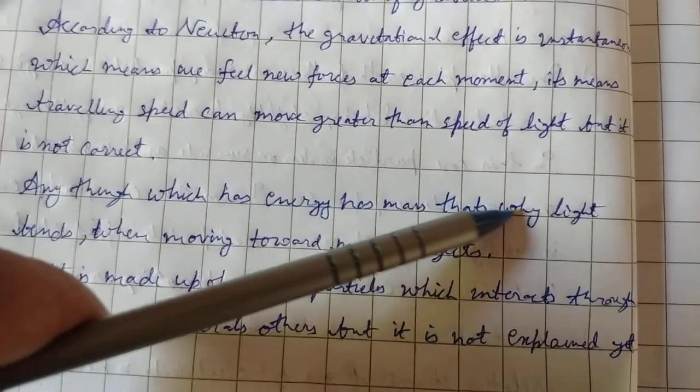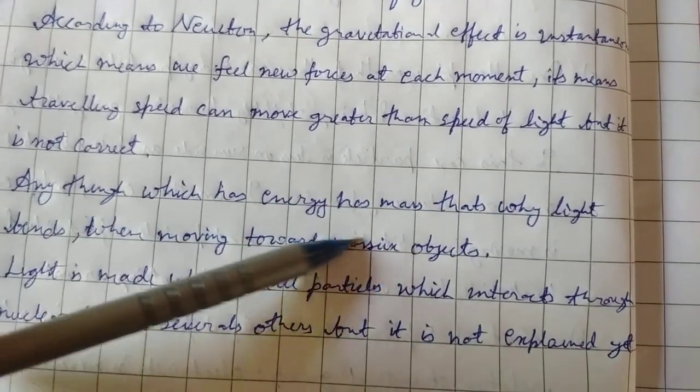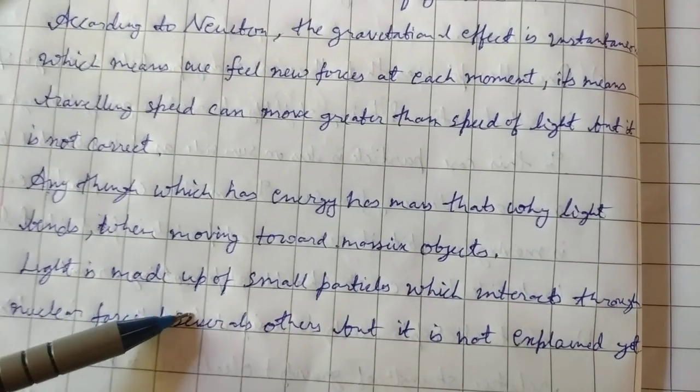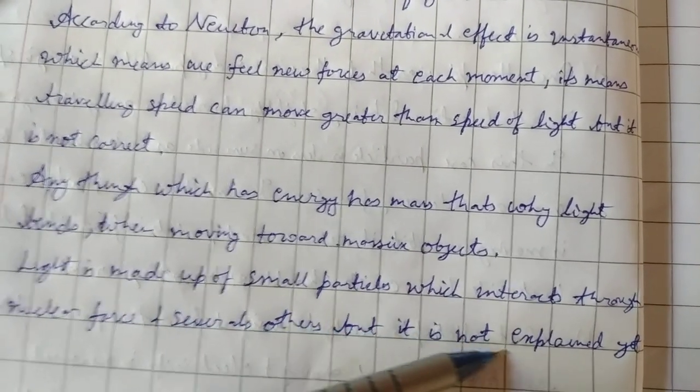Anything which has energy has mass, that's why light bends when moving towards massive objects. Light is made up of small particles which interact through nuclear forces and several others, but it is not explained yet.